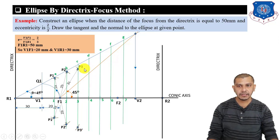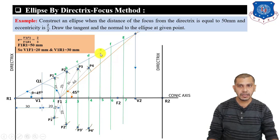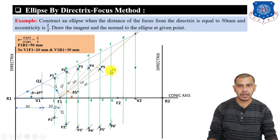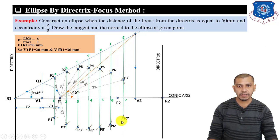Measure arc length 4D and from F1 as center give an arc on both sides to get P4 and P4'. Measure arc length 5E from F1 as center to get P5 and P5'. Measure arc length 6F from F1 to get P6 and P6'. Measure arc length 7G from F1 to get P7 and P7'. The last point will be about V2.